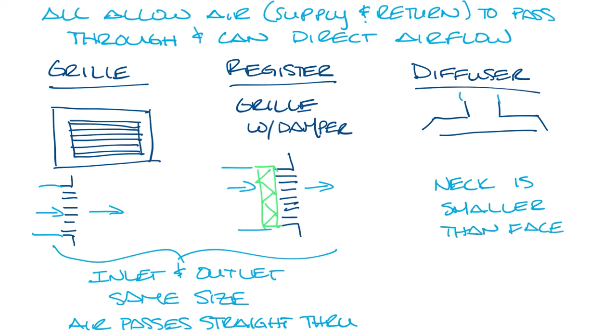Also, when air passes through a diffuser, it comes in through the neck, but then it will turn and come out the diffuser and ideally hug along the ceiling. So the airflow will change directions as it exits the diffuser.